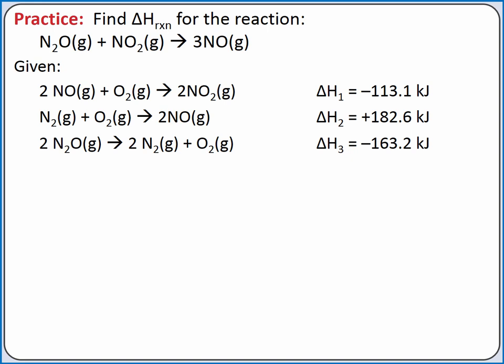Let's practice using Hess's Law. We want to find the change in enthalpy for the reaction: dinitrogen monoxide gas combines with nitrogen dioxide gas to produce 3 nitrogen monoxide gas. We're given three equations with these compounds, and we'll need to add together combinations of those equations to get the overall reaction. We start by looking for substances that appear in only one of the given reactions — for example, dinitrogen monoxide gas only shows up in the third reaction.